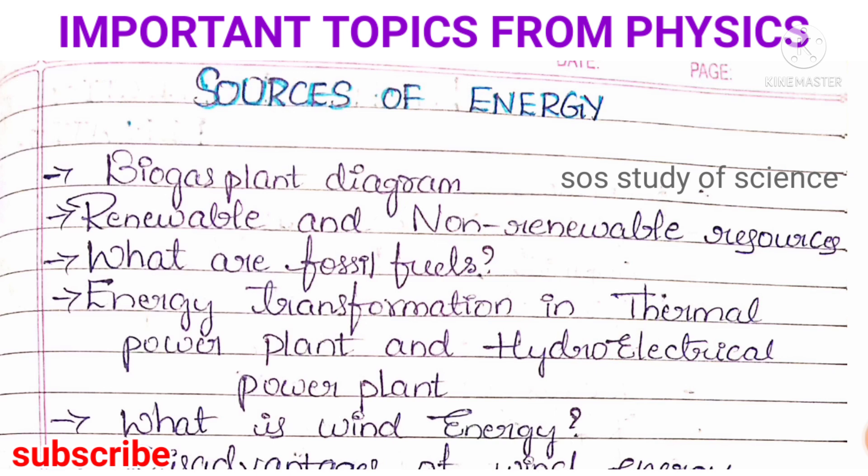The first lesson I would like to discuss is Sources of Energy. For this particular lesson, 3 marks is allotted. When I explain each lesson, you have to make note that you are going to study every concept I discuss without fail. For Sources of Energy, you need to learn about the biogas plant diagram. In the previous year question paper this diagram was not asked, but as per the Akashwani program discussion, this diagram can be expected in the 2022 board examination.